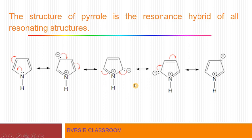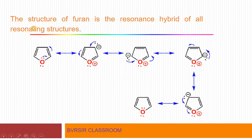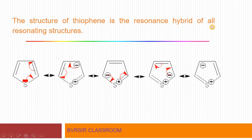These are the resonating structures. More the number of resonating structures, more will be the stability of that particular molecule. Similarly, the structure of furan is the resonance hybrid of all its resonating structures. Just as in pyrrole, the heteroatom oxygen has a lone pair of electrons that can migrate — charge transfer occurs, and oppositely charged centres develop with positive and negative charges shifting around the ring, giving multiple resonance structures. The structure of thiophene is likewise the resonance hybrid of all its resonating structures.